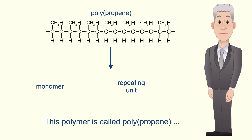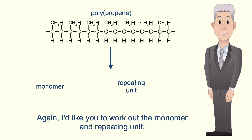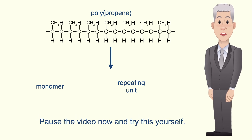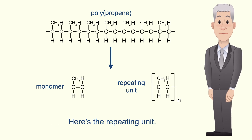This polymer is called polypropene and is used to make carpets. Again, work out the monomer and repeating unit — pause the video now and try this yourself. The monomer is propene, and here's the repeating unit.